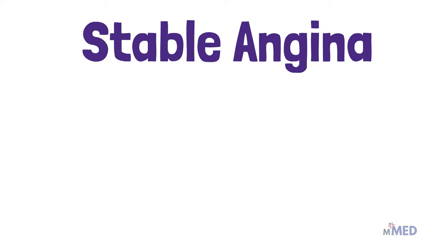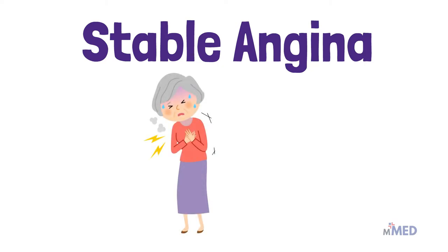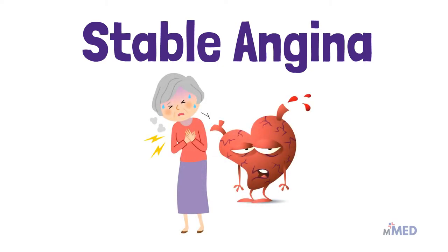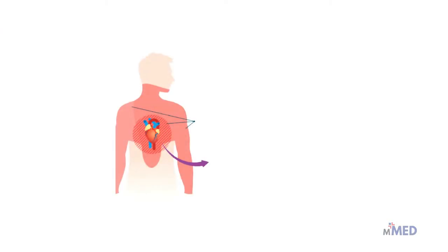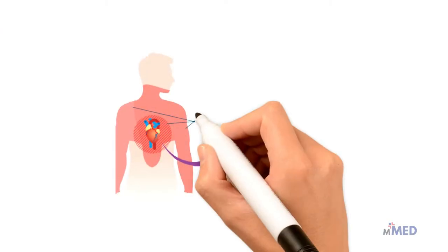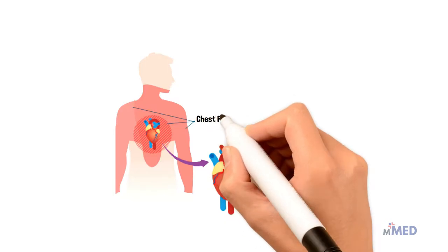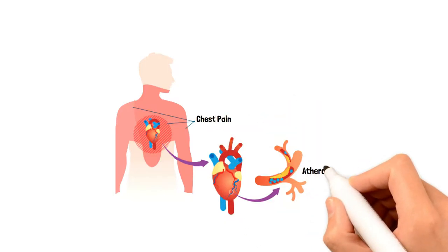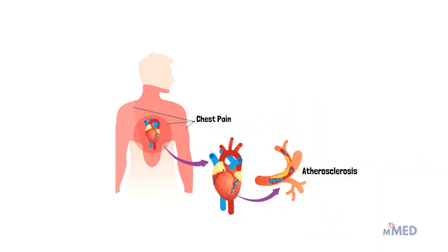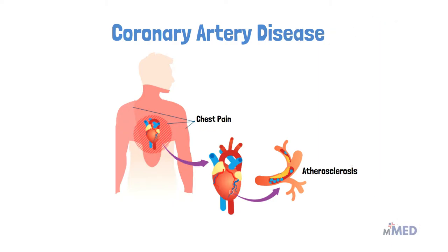Welcome to Minute Med. In this video we will speak about stable angina, which is one of the most common types of chest pain in the world. Stable angina refers to the type of angina resulting from myocardial ischemia due to a fixed atherosclerotic plaque of one or more coronary arteries, a condition known as coronary artery disease.